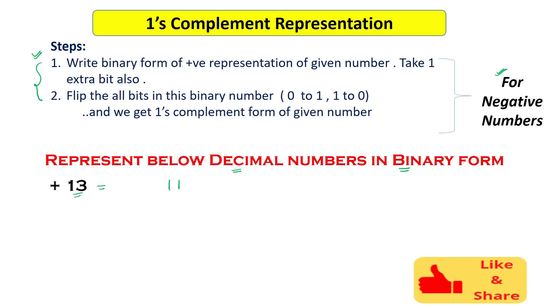For converting a positive number, note that all these steps are meant only for negative integer numbers. To convert +13, first we write the magnitude of 13 in binary form. In binary, 13 is represented as 1101, with weights 1, 2, 4, 8 — so 8 + 4 = 12, and 12 + 1 = 13.